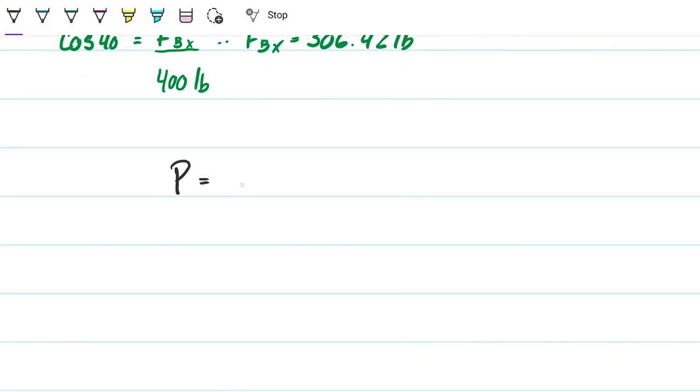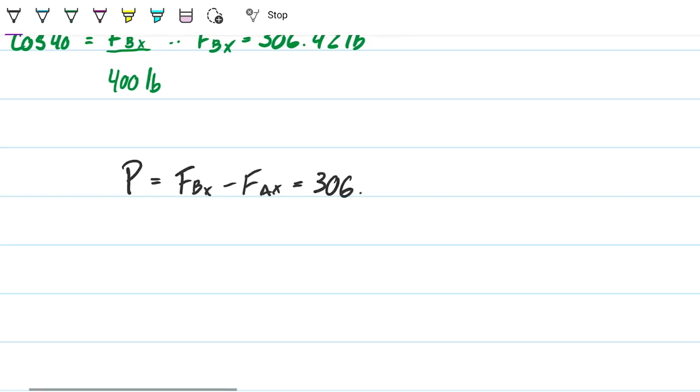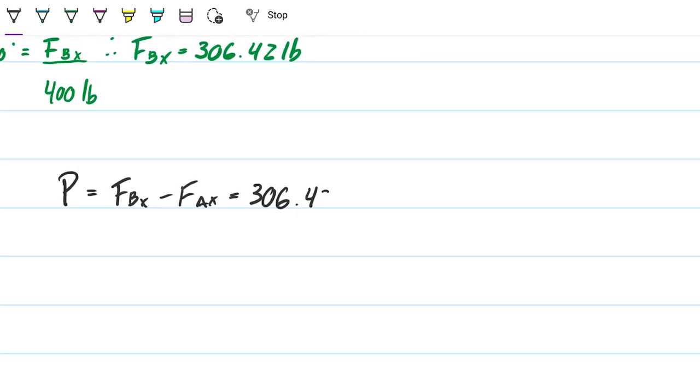And that's exactly what we came up with. We said, okay, P needs to be the difference between my f bx and my f ax, which happened to be 306.42 minus 128.56. And therefore P is equal to 177.86 pounds. All right, beautiful. So just decompose the forces, and then we found out what P needs to be so that the resultant is zero on the x direction.